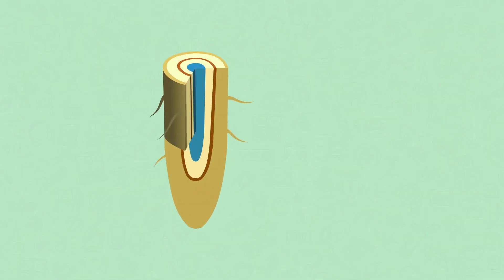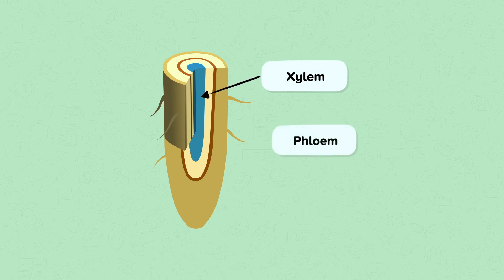Here is the structure of a root. Minerals are dissolved in water found in the soil. The water and minerals are absorbed by the root hair cells and then transported around the plant in the xylem vessels. Roots have a very large surface area, and the root hairs increase the surface area further to speed up absorption of water and minerals.